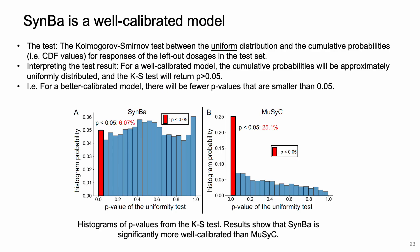SIMBA is also better calibrated than existing models. We perform the KS test between the uniform distribution and accumulated probabilities for the left-out responses, across every combination in the DREAM training set, resulting in a p-value for each combination. For a better calibrated model, there will be fewer p-values smaller than 0.05. The result shows that SIMBA is significantly more well-calibrated than MuSyC.